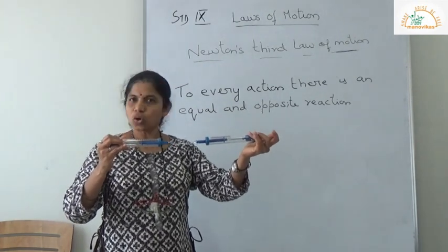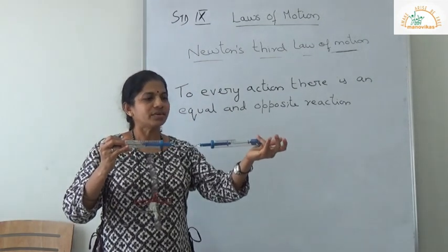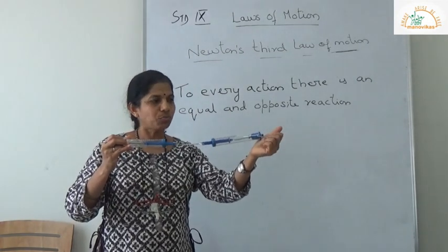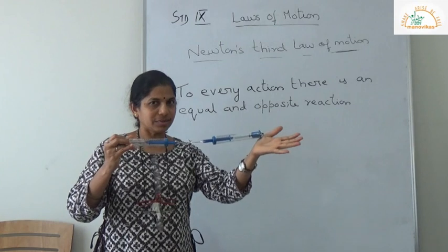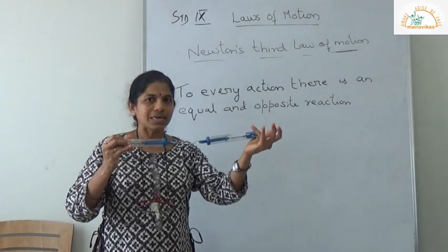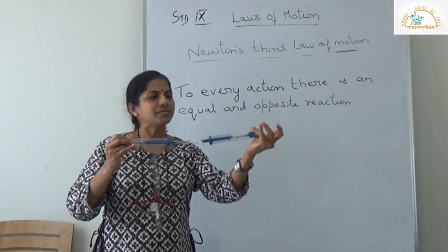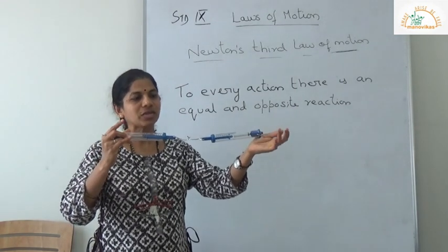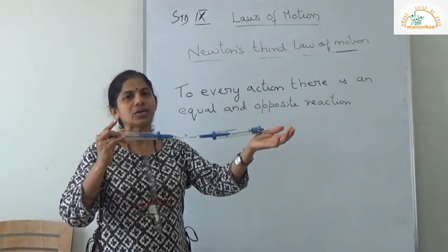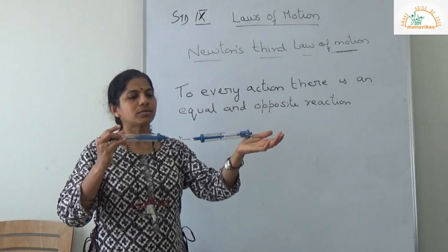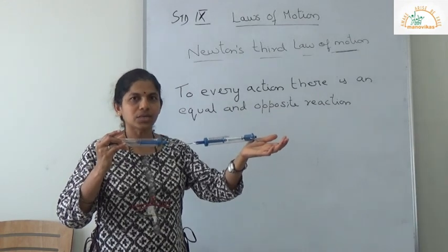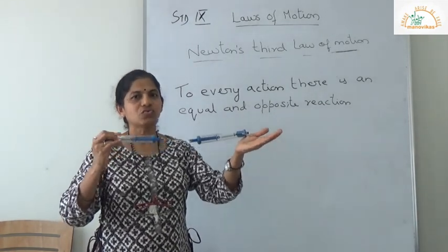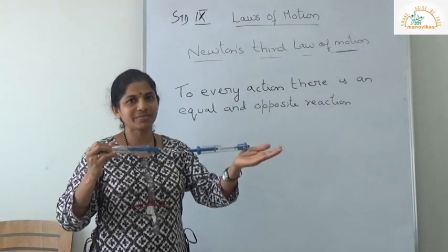There are two objects. My hand is actually pulling this spring balance. In turn, this spring balance is exerting a force on the second spring balance. That is how it works — the third law works on the basis of action and reaction, and the forces are equal and opposite.